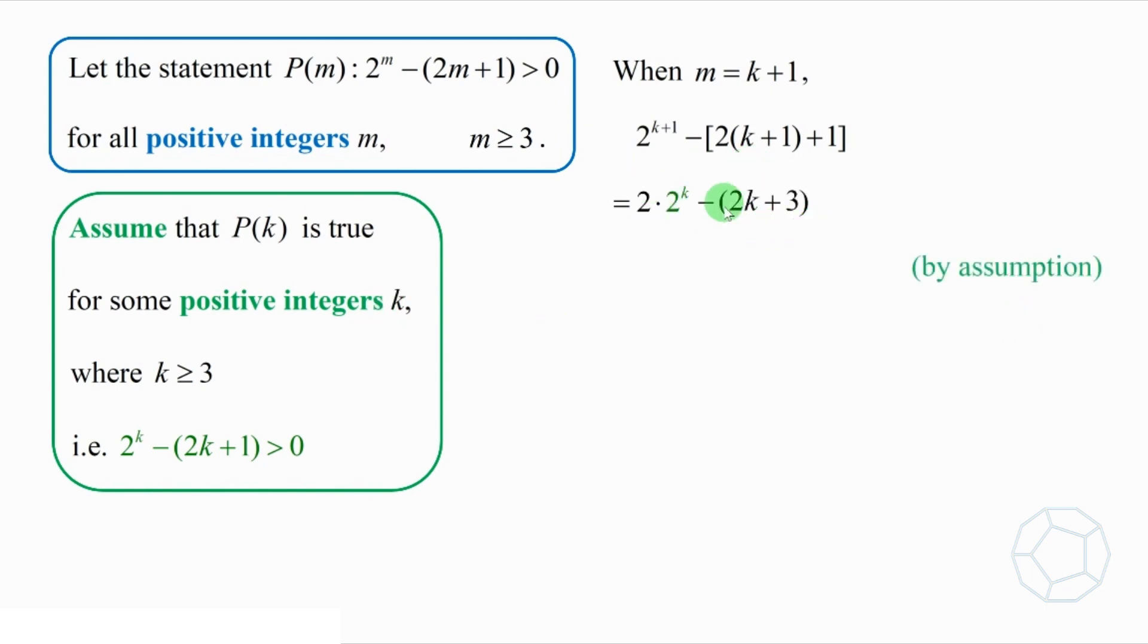By assumption, the green term 2 to the power of k is larger than 2k plus 1. So, we get rid of the exponential term. Now, it's easy to simplify. We get 2k minus 1. For k being larger than or equal to 3, 2k minus 1 must be larger than 0. Therefore, if p of k is true, then p of k plus 1 is also true.